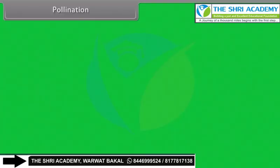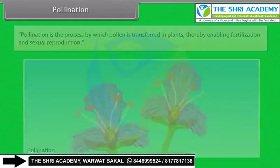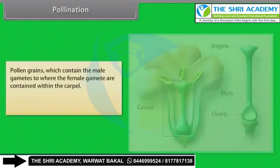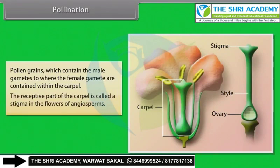Pollination is the process by which pollen is transferred in plants, thereby enabling fertilization and sexual reproduction. Pollen grains, which contain the male gametes, are transferred to where the female gamete are contained within the carpel. The receptive part of the carpel is called a stigma in the flowers of angiosperms.